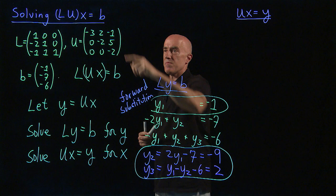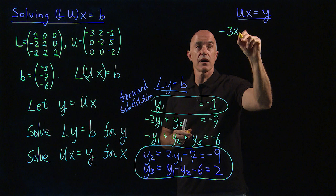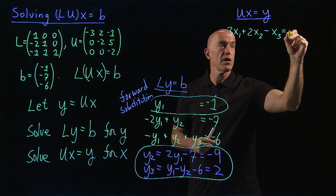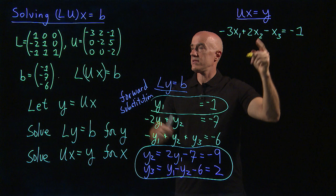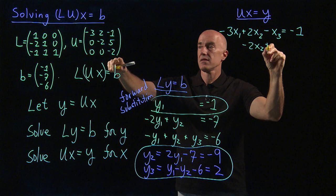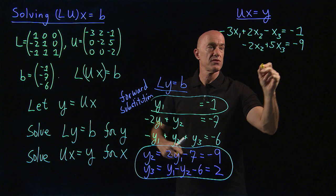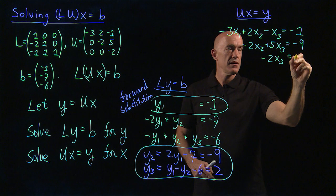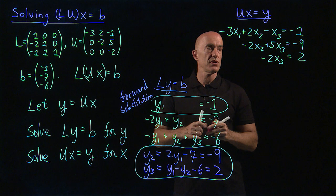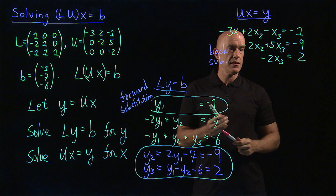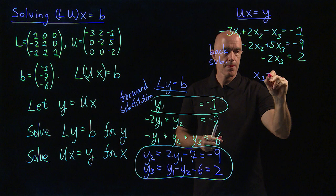So now we're going to use the Ys to solve UX equals Y. So here's the U equation, so this is starting from the top equation. We have minus three X1 plus two X2 minus X3 equals Y1 is minus one. Then the second row of this equation is minus two X2 plus five X3 equals Y2, which is minus nine. And then the last row is minus two X3 equal to Y3, which is two. So now we do back substitution. So we start at the bottom and go up.